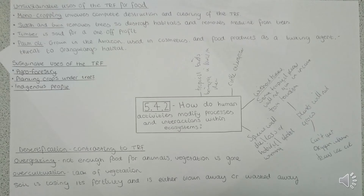5.4.2 looks at how we modify processes and interactions within ecosystems and how we use them. We use the tropical rainforest for food, as seen in the diagram. Solutions include agroforestry — planting crops under the trees — and getting indigenous people involved in using, selling, maintaining and harvesting fruits, nuts and berries in the tropical rainforest.